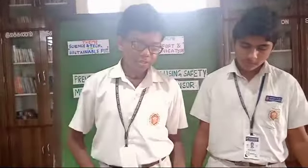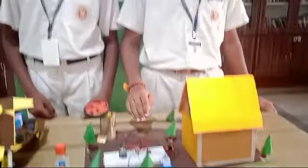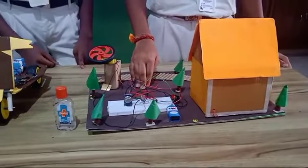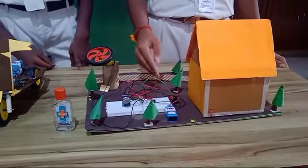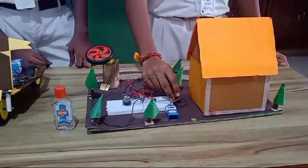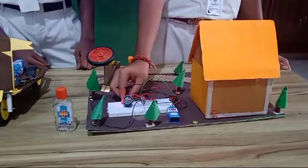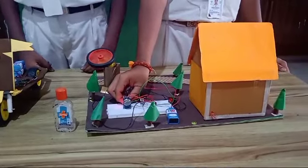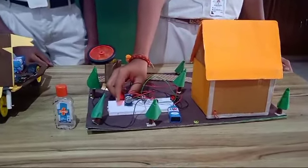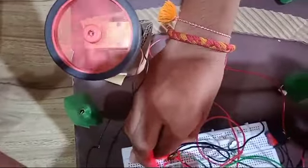Here we have done two models. This first model is called automatic engine cutoff sensor using alcohol sensor and MOSFET. It will work when the sensor senses the alcohol — it automatically turns off the engine by sensing the alcohol content.